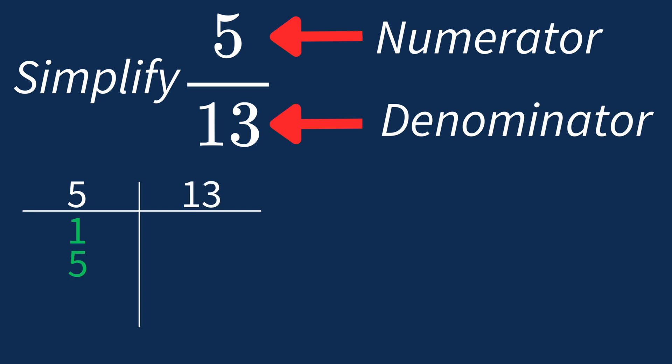For 13, the factors are 1 and 13. So in this case, the largest common factor is 1.